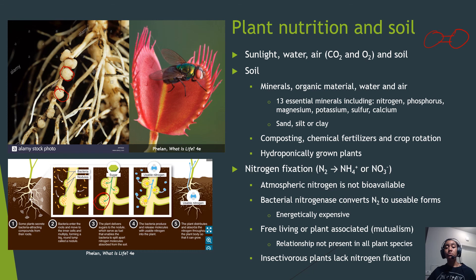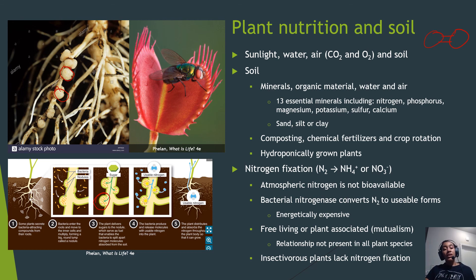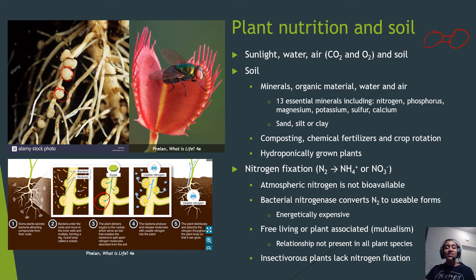Some plants grow in nitrogen-poor soils too acidic for nitrogen-fixing bacteria, so they find nitrogen another way — by eating insects. These insectivorous plants, like the Venus flytrap, dissolve and digest insects and use the nutrients, primarily nitrogen, to support their own growth.